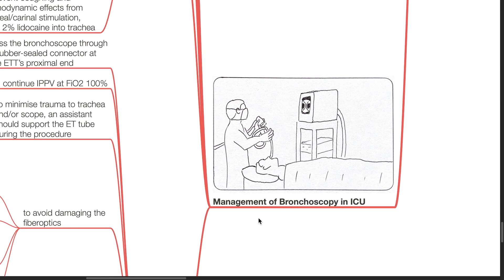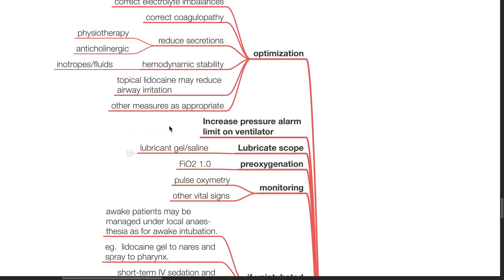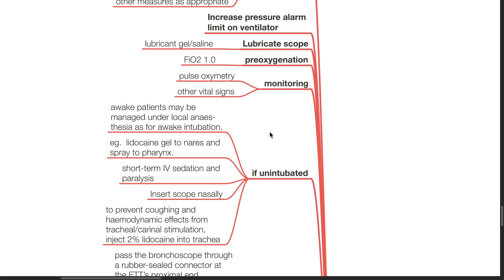Management of bronchoscopy in the ICU: optimization includes correcting electrolyte imbalances and coagulopathy, reducing secretions by physiotherapy and anticholinergic drugs, maintaining hemodynamic stability with inotropes and fluids. Topical lidocaine may reduce airway irritation. Increase the pressure alarm limit on the ventilator. Lubricate the scope with lubricant gel or saline. Pre-oxygenate with 100% oxygen. Monitoring as standard. If un-intubated: awake patients may be managed under local anesthesia as for awake intubation — lidocaine gel to nares and spray to pharynx, short-term IV sedation and paralysis. Insert the scope nasally. To prevent coughing and hemodynamic effects from tracheal or carinal stimulation, inject 2% lidocaine into the trachea.